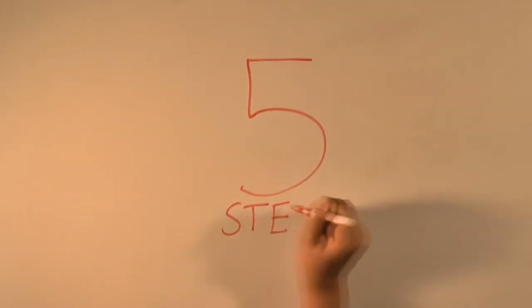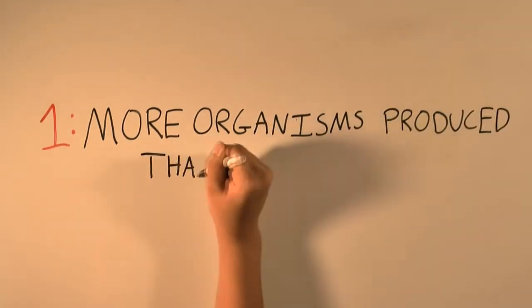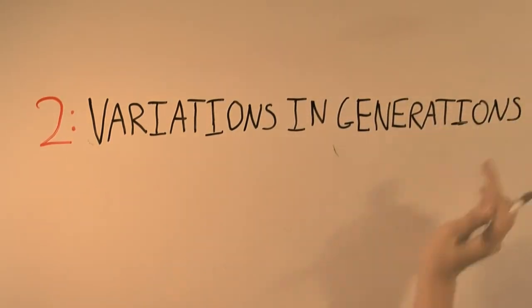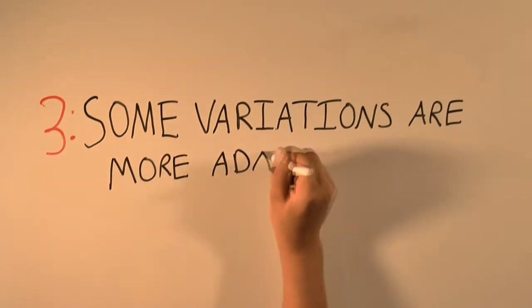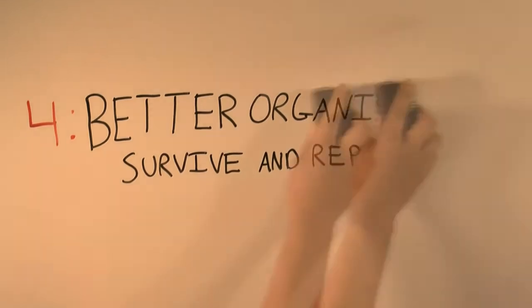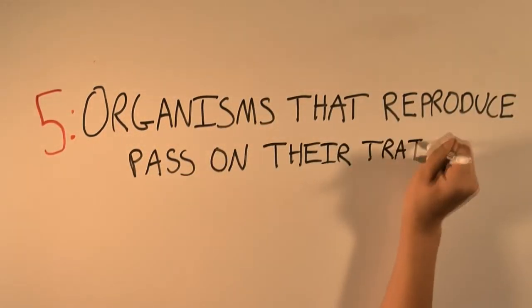Now don't forget these things like you do with my birthday last year. Step one: there are more organisms produced than will survive. Step two: there is variation within each generation. Step three: some variations are more adapted for the environment. Step four: better organisms will survive and reproduce.